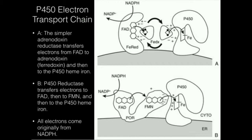Let's look individually at each one. The top one, listed as A here, is one of the electron transport chains for P450, but this is the one that tends to exist in the mitochondria. This system is called the adrenodoxin reductase system. This enzyme here — labeled FE red — basically means adrenodoxin reductase. The small protein that comes in contact with adrenodoxin reductase is adrenodoxin, which is similar to ferredoxin.